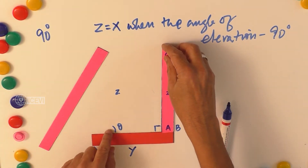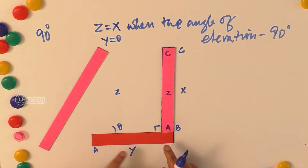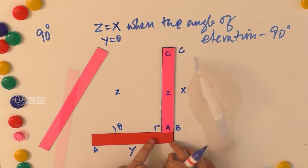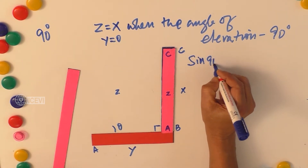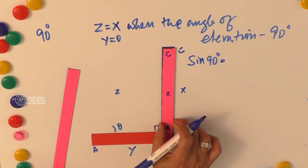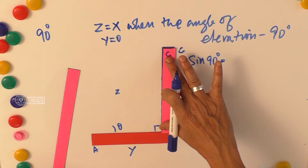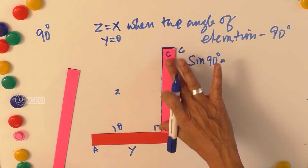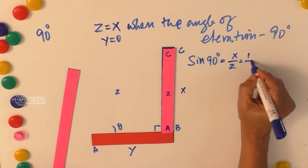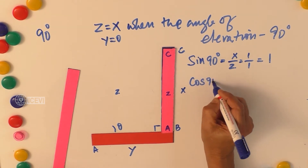When the angle of elevation becomes 90 degrees — that is when theta becomes 90 degrees — Y becomes 0, because there is no base when the two lines are identical. Now let us discuss sin 90 degrees. Sin 90 degrees is when AC, which is the hypotenuse, is coinciding with the opposite, making it one unit. So sin 90 degrees is X by Z, that is 1 by 1, which equals 1.